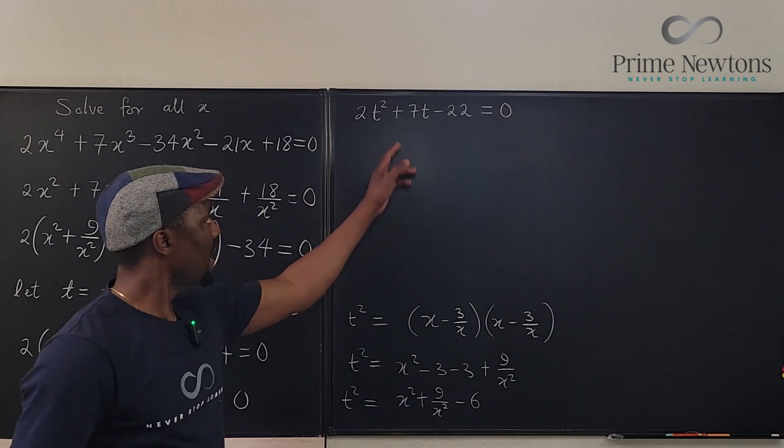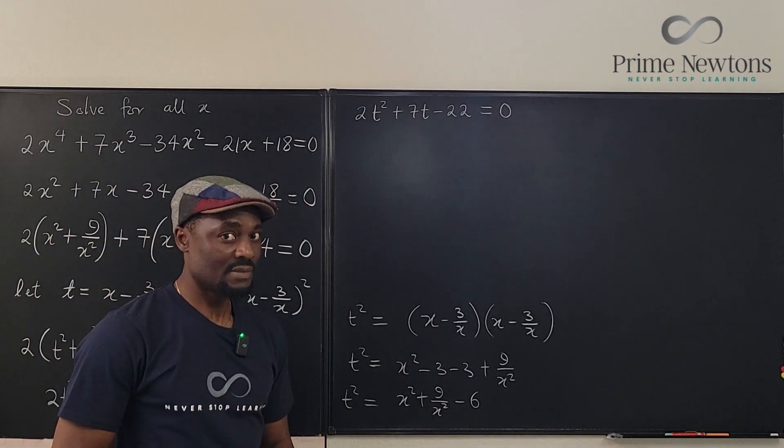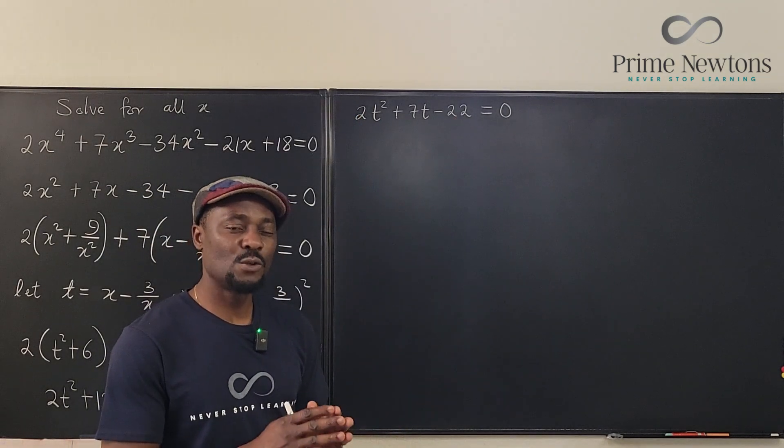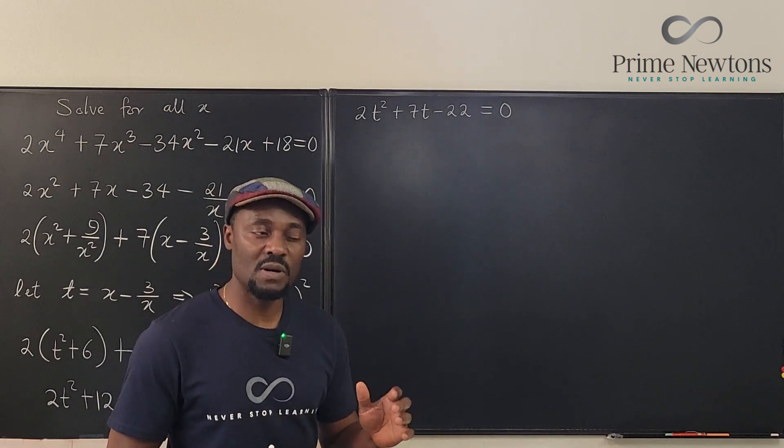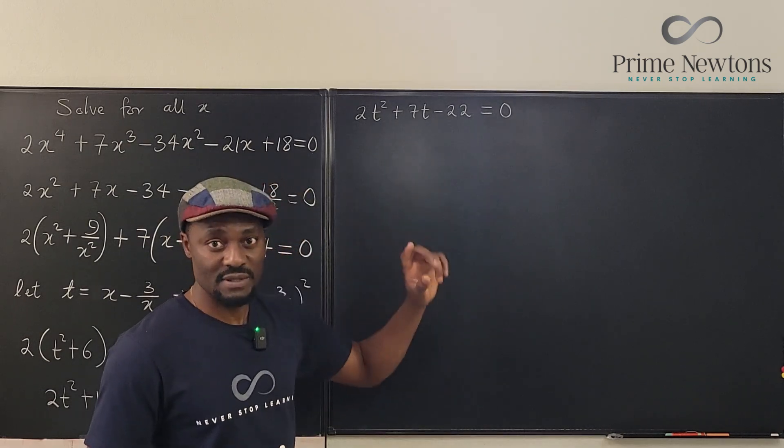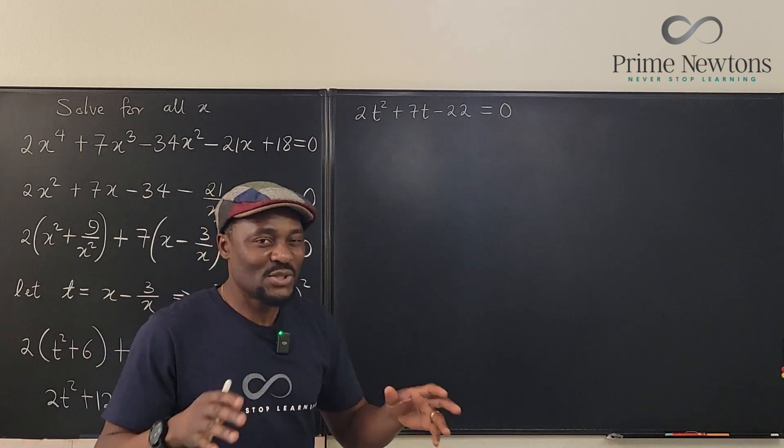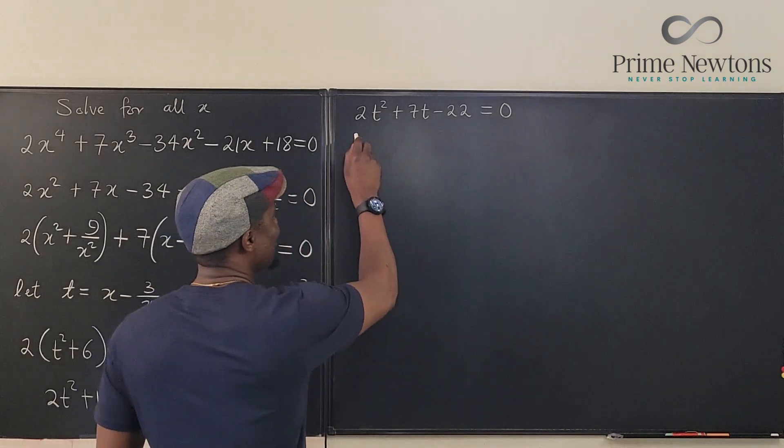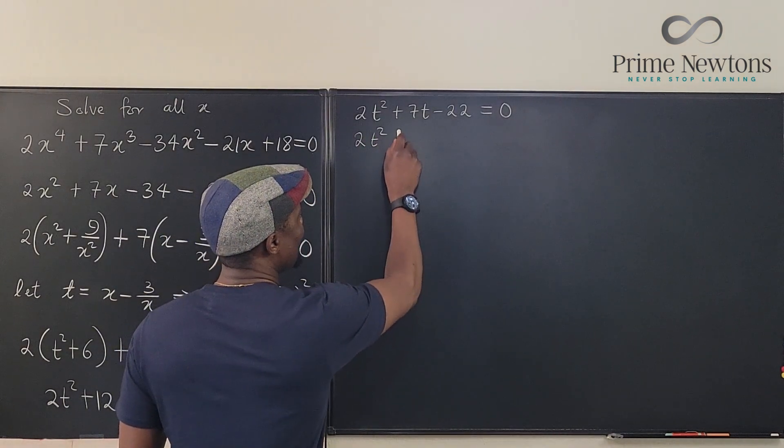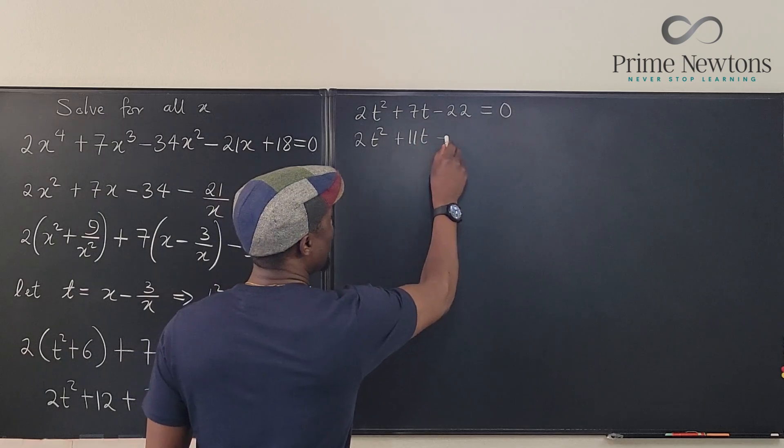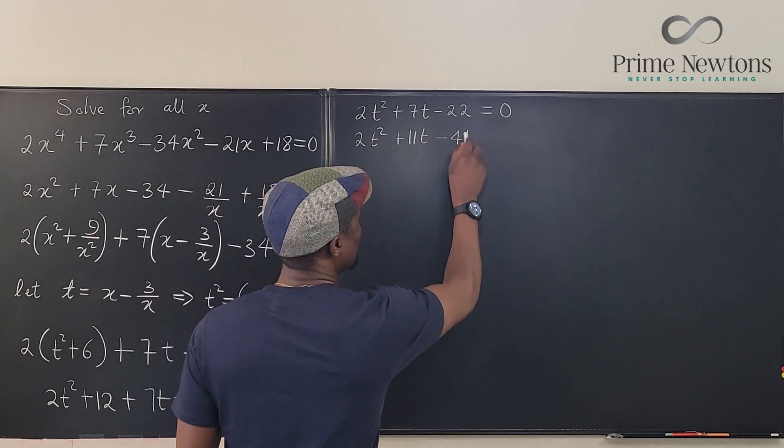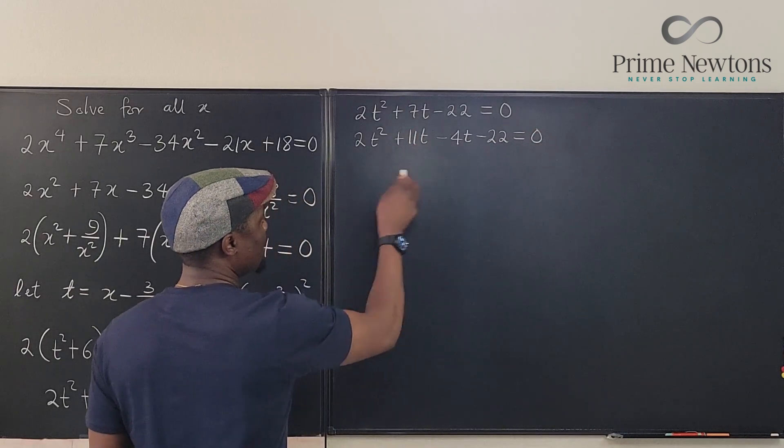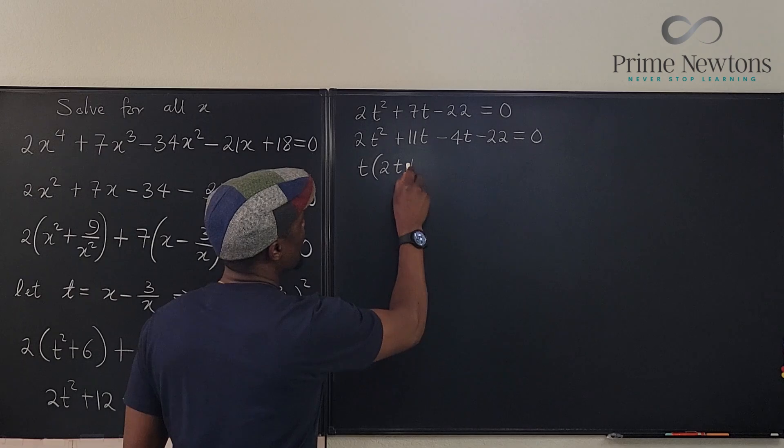This can be factored. Multiply 2 by negative 22, you get negative 44. And you say, what two numbers will I multiply to get minus 44, but when I add them together I'm going to get plus 7? That's easy. 44 is just 11 times 4, and 11 minus 4 is 7. So it's easy for you to know that this is going to be 2t² plus 11t minus 4t minus 22 equals zero. So I just replace 7t with this.